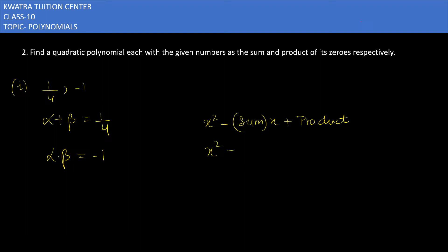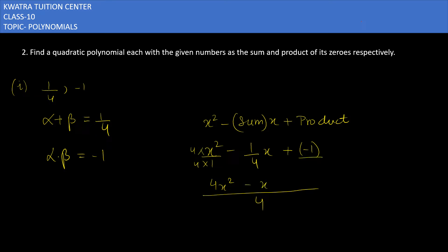So we have x squared, the sum value is 1/4, giving us (1/4)x, and the product is minus 1. Since there is a 4 in the denominator, we take the LCM. This gives us 4x squared — we multiply each term accordingly, so the last term becomes minus 4. You can then ignore the denominator, and your polynomial is 4x squared minus x minus 4. This is the polynomial for the first case.